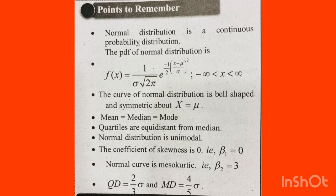Here x ranges from minus infinity to plus infinity. The curve of normal distribution is a bell-shaped curve — it is symmetrical. The right side and left side are equal, symmetric about x equal to mu.